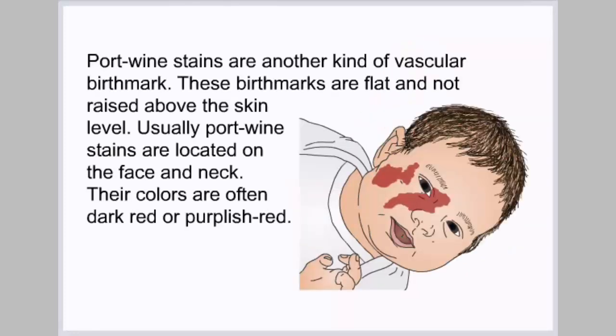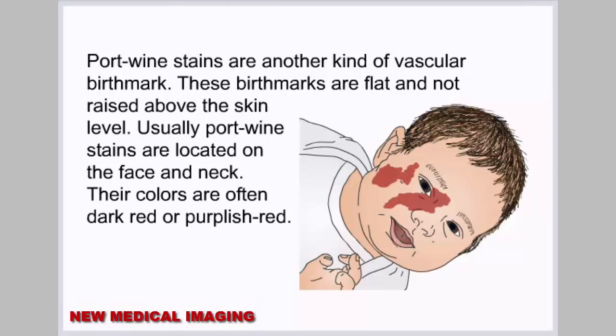Port wine stains are another kind of vascular birthmark. These birthmarks are flat and not raised above the skin level. Usually port wine stains are located on the face and neck, and their colors are often dark red or purplish red.